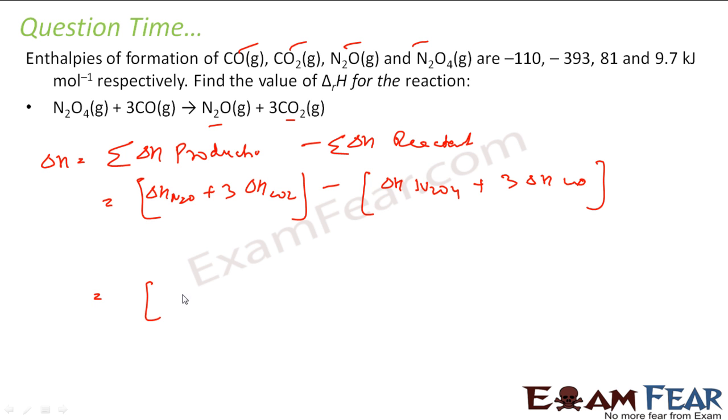If you put these values here, this becomes N2O that is 81 plus 3 into CO2 that is minus 393 minus N2O4, the last one that is 9.7.